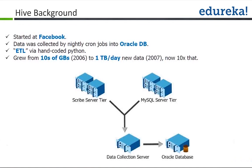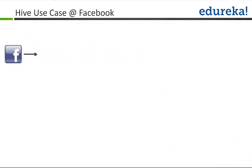Facebook's whole service generates from what you do on that particular page. They had a requirement to capture all user activity, analyze the data, and then come up with recommendations or services for each user. Instead of using Oracle, because Oracle was not able to scale in terms of their data requirements, they started moving towards a big data kind of solution.